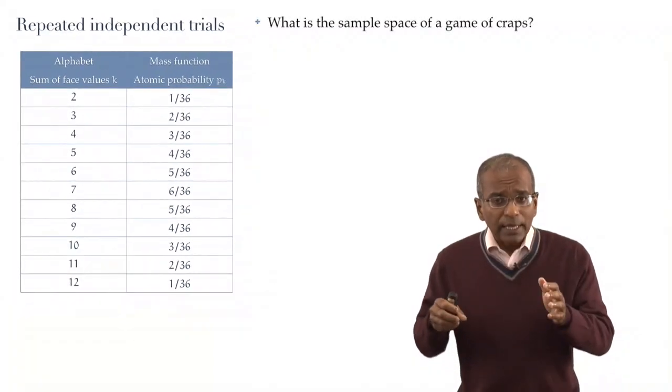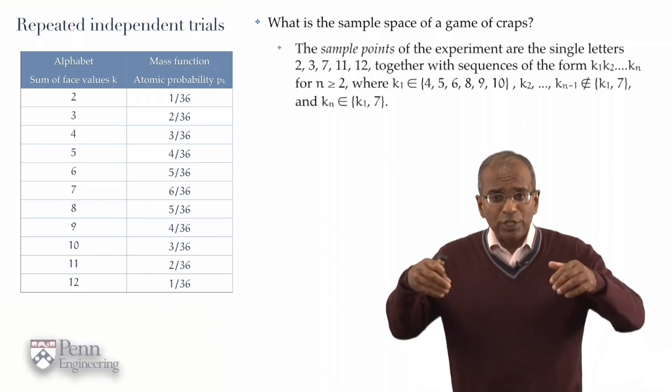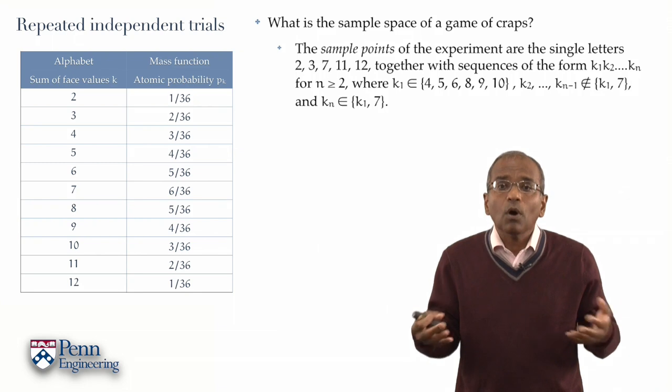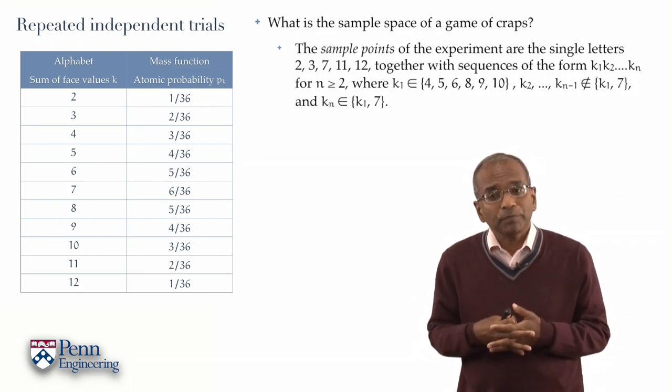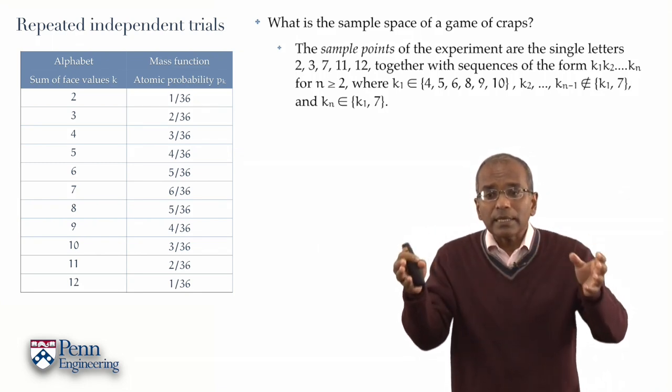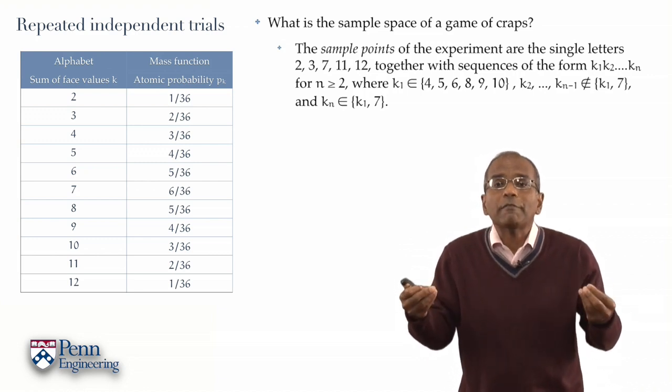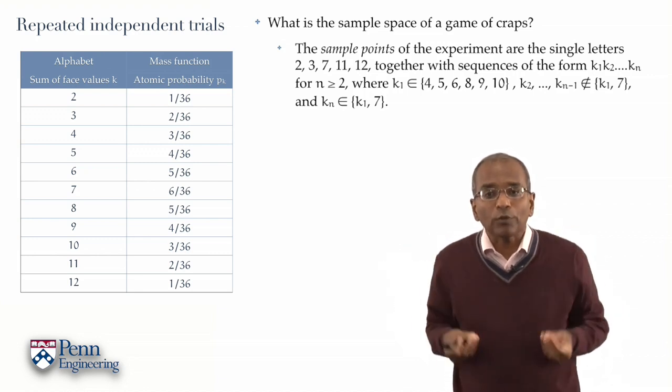It is clear that one way of engendering a sample point is to throw one of the numbers 2, 3, 12, or 7, 11. So, the single letters, 2, 3, 12, 7, or 11, constitute bona fide sample points of the experiment.